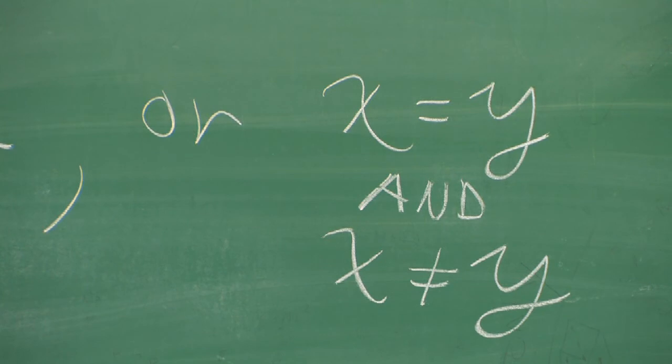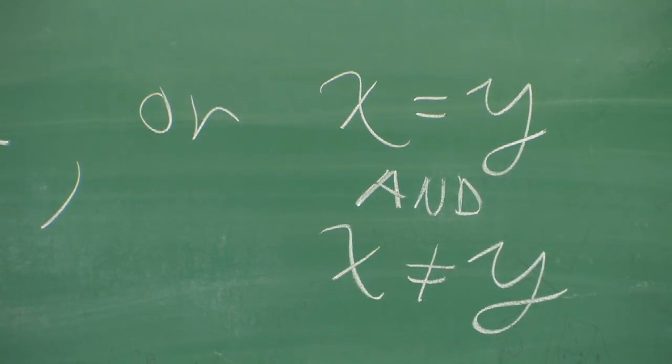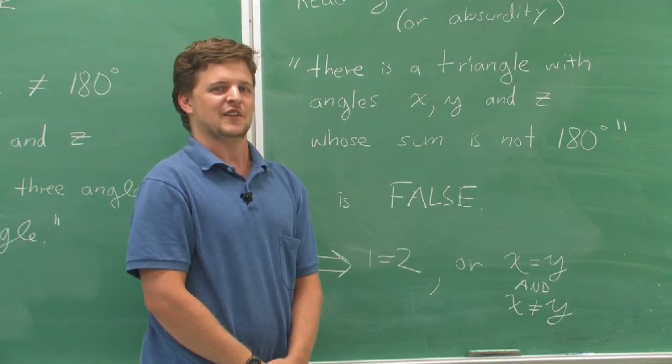For instance, it might imply that x equals y and x does not equal y. Everyone knows that that can't be true.